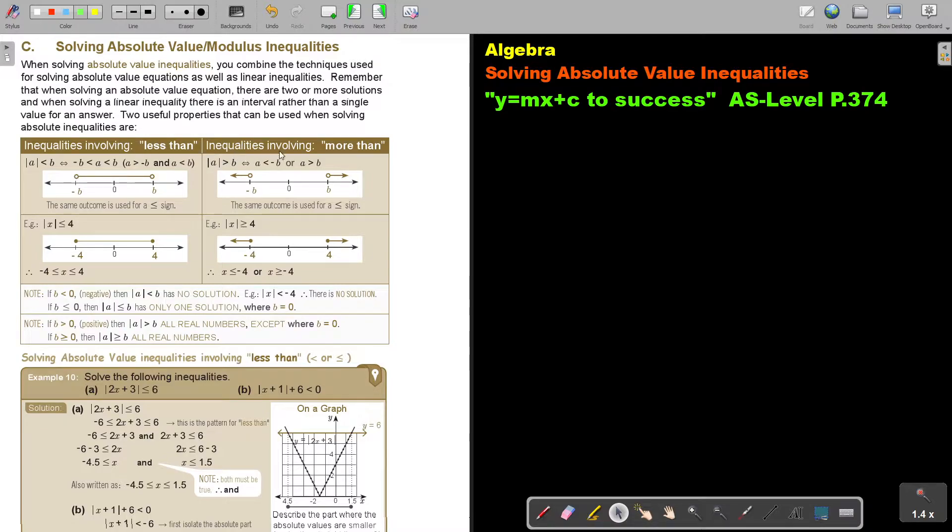Now inequality is involving more than. But if it's more than, it means to that side and that side. So keep this picture in your mind. Let's rather look at the example, it's going to be smaller and equal to negative 4 or bigger and equal to 4. And if there's not an equal, I just leave out the equal sign.